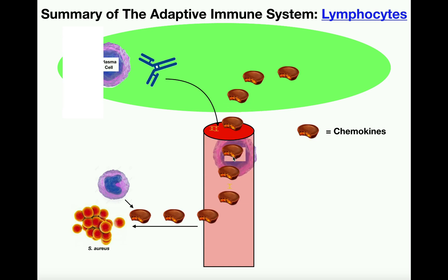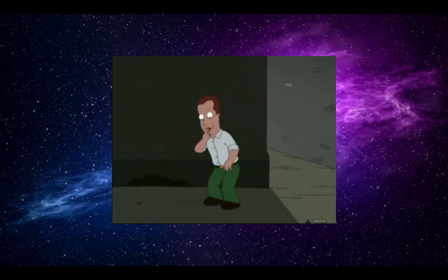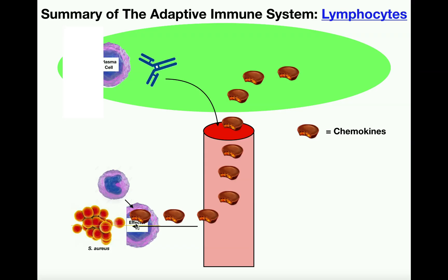It's similar to following a trail of breadcrumbs — the effector cytotoxic T cell is not moving randomly, it's following the trail of chemokines as shown, leading it directly to the pathogen.